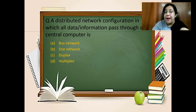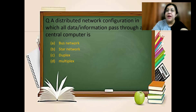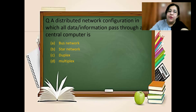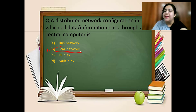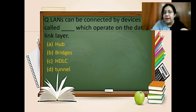Next question: a distributed network configuration in which all data and information passes through a central computer — what is this called? It is called a star network. Everything passes through one central computer, so we call it a star network.